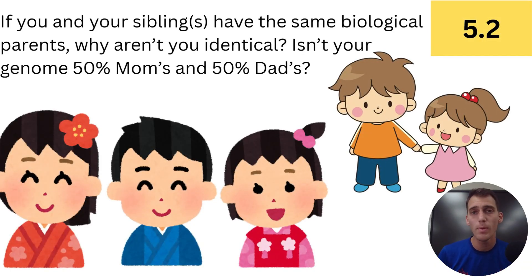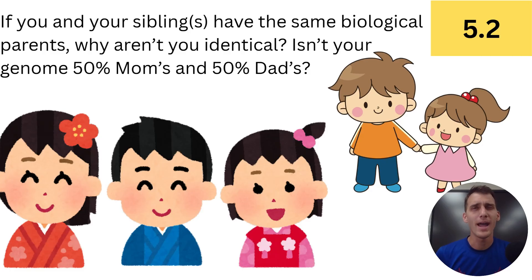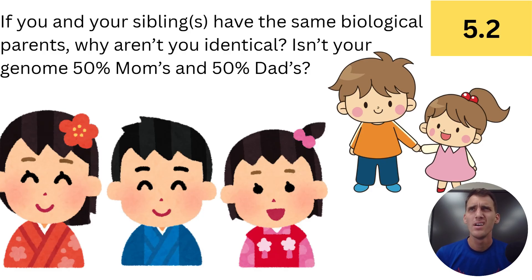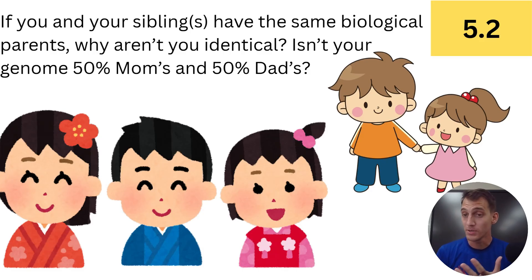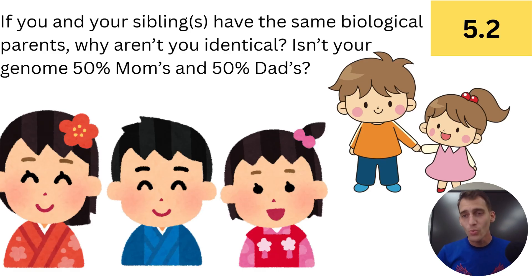Maybe I didn't pay enough attention in my freshman biology class because I didn't really get this until I took AP Biology. Maybe you're wondering the same thing as me. I have an older brother and I wondered: if 50% of my DNA came from our mom and 50% came from our dad, and his DNA also came 50% from mom and 50% from dad, then why aren't we like the same person? Don't we have half and half?